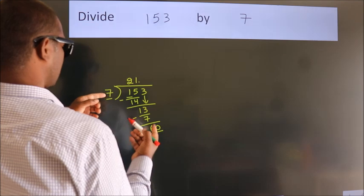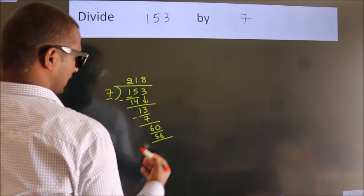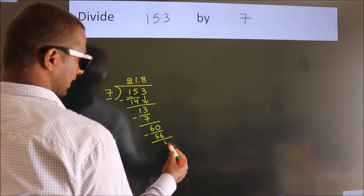A number close to 60 in the 7 table is 7 eights, 56. Now we subtract. We get 4.